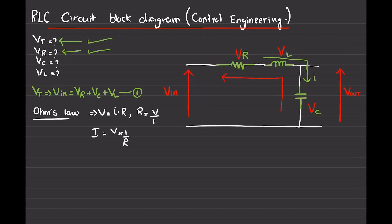We have to find out the voltage drop across the resistor, which is VR. The actual formula is V equals I times R, so we are going to equate VR to the product of current with R, where R is the amount of resistance in Ohms. Let's call this equation number two.